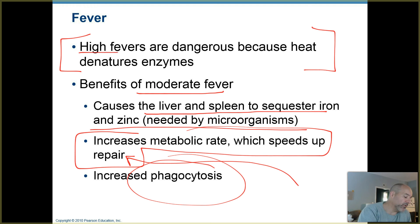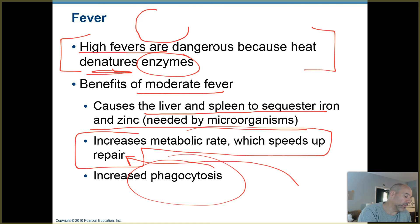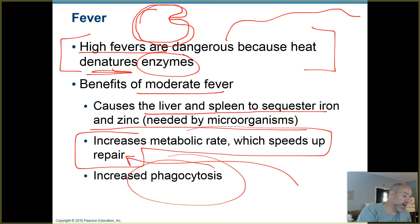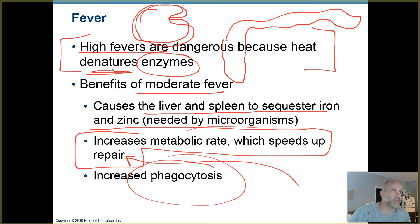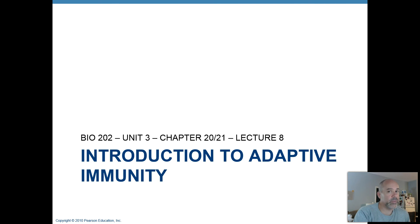High fevers — getting up into the 105–106°F range and higher — become dangerous because your enzymes are sensitive to those temperatures and can denature. Most enzymes are proteins with particular three-dimensional shapes, and high temperatures can cause them to unravel and lose that shape — this is called denaturation. Once denatured, they can no longer perform their chemical reactions, and if your enzymes aren't working, that's life-threatening. High fevers are also dangerous because they dehydrate you, disrupting water levels and electrolyte concentrations in the body.